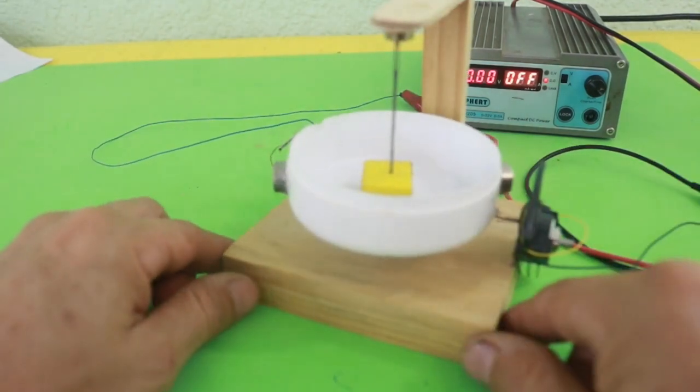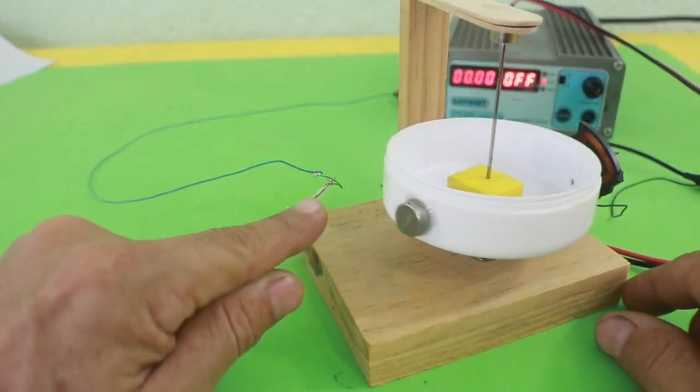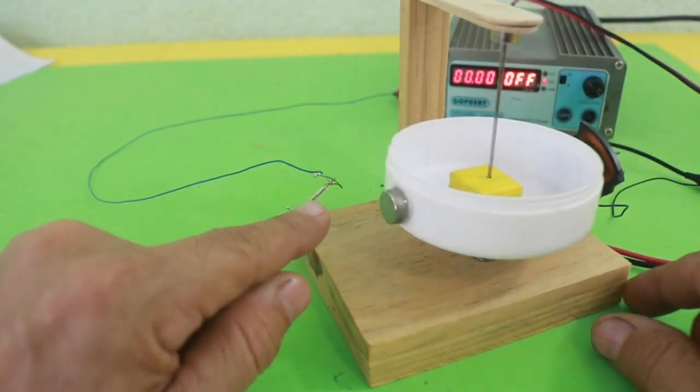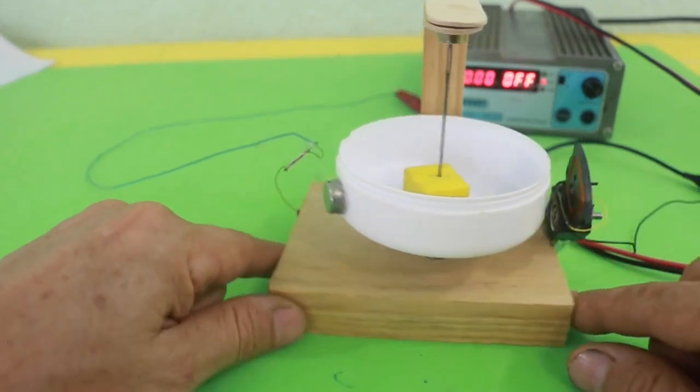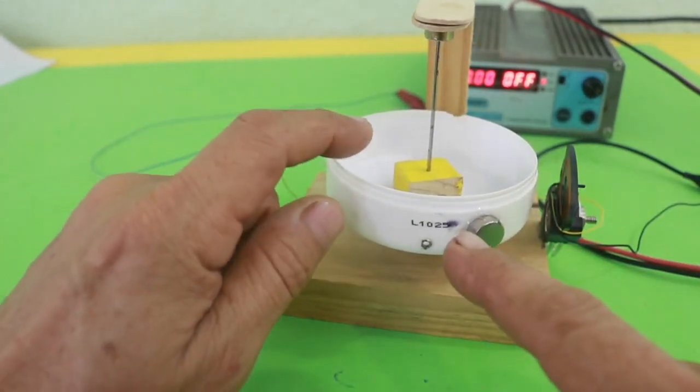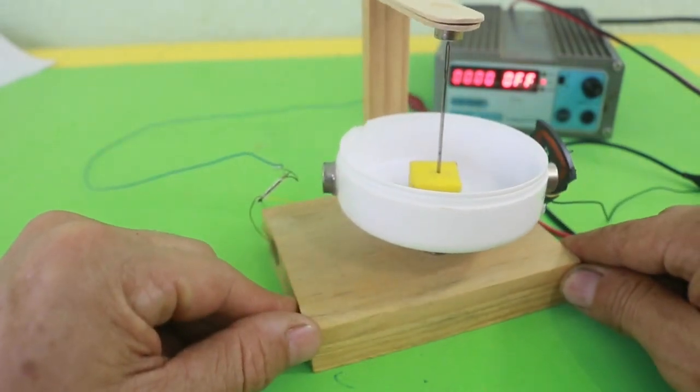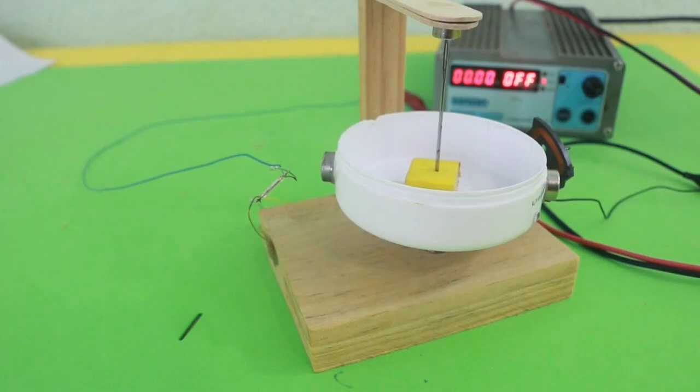And here we have the coil and also a reed switch at the other side. The purpose of the reed switch is to turn the coil on and off when a magnet passes near the coil. So let's see the motor in action.